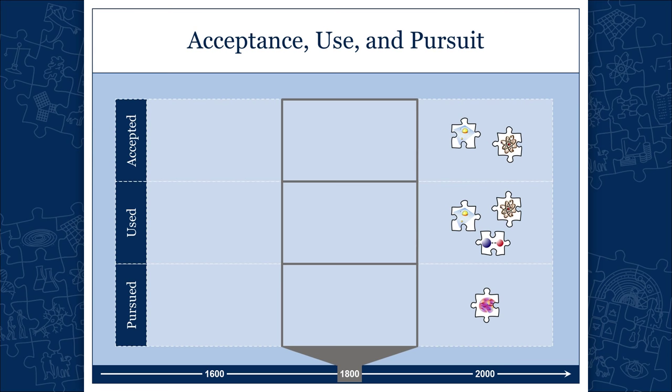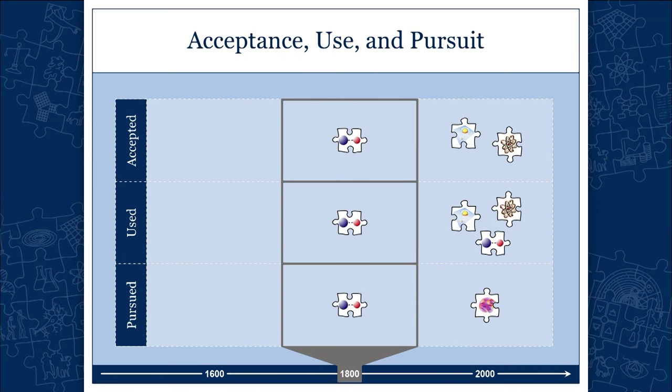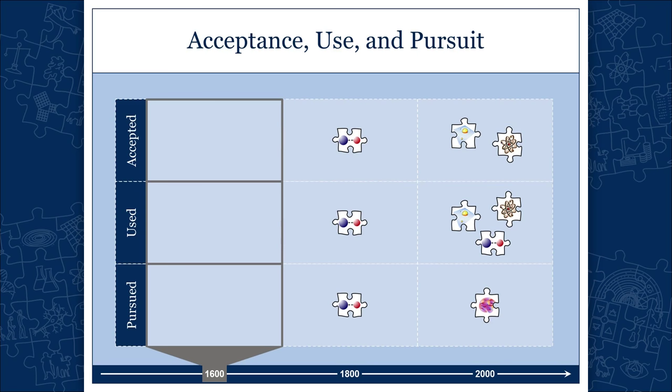Do you see the difference? Accepted theories, used theories, pursued theories. Sometimes the three coincide. If we went back to the early 19th century, accepted theory, used theory, and pursued theory were all the same — all Newtonian physics. It was the theory taught in universities, used in practical applications, and being elaborated. But cases like this are far and few between.